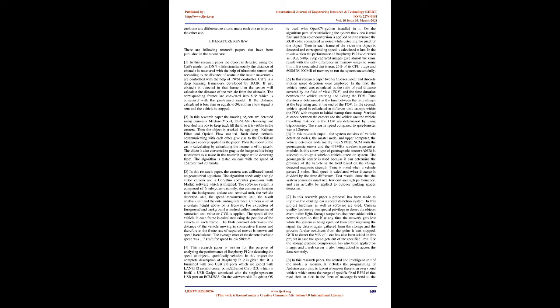If the distance calculated is less than or equal to 30 centimeters, a low signal is sent and the vehicle is stopped. In another research paper, moving objects are detected using the Gaussian mixture model, scan clustering, and bounded in a box to keep track until the time it is visible in the camera. Then the object is tracked by applying Kalman filter and optical flow method. Both these methods communicating with each other give rise to the Euclidean manager concept applied in the paper. The speed of the car is calculated by calculating the moments of its pixels, and the video is also converted to grayscale. The algorithm is tested on cars with speeds of 15 km/hr and 20 km/hr.